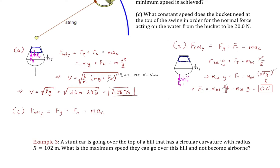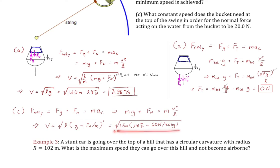For part c: what constant speed does the bucket need at the top for the normal force on the water to be 20 newtons? We expect a value larger than 3.96 m/s. Plugging in the actual value for the normal force and solving for v gives 4.87 m/s — a reasonable answer since faster spinning produces a larger normal force.